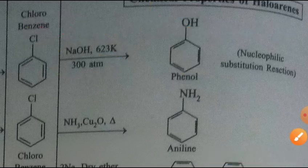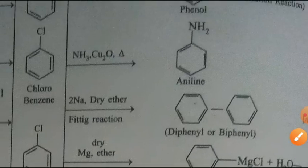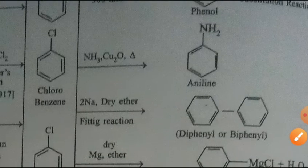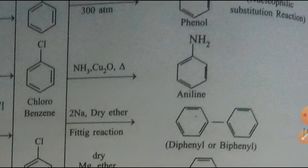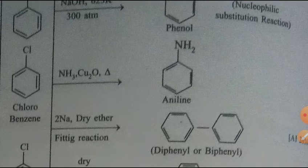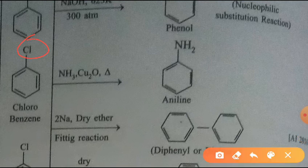Next, by reacting chlorobenzene with ammonia in the presence of copper oxide and heat, you get aniline. This is again a substitution reaction in which Cl is replaced by NH₂. The H of NH₃ reacts with the Cl and you get HCl as a byproduct, while aniline is obtained.